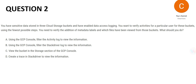Moving on to question 2. You have sensitive data stored in three Cloud Storage buckets and have enabled data access logging. You want to verify activities for a particular user for these buckets. Using the fewest possible steps, you need to verify the addition of metadata tables and which files have been viewed from those buckets. What should you do? The options are: A — using the GCP console, filter the activity log to view the information. B — using the GCP console, filter the Stackdriver log to view the information. C — view the bucket in the storage section of the GCP console. D — create a trace in Stackdriver to view the information.